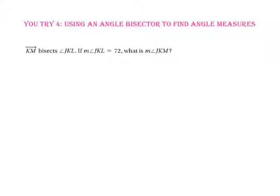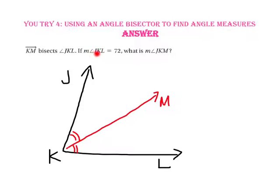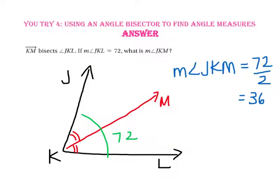Pause the video and do You Try number 4. Ray KM bisects angle JKL — start with a diagram. If the measure of angle JKL is 72 degrees, then angle JKM is half of the entire angle. So the measure of angle JKM is 36 degrees.